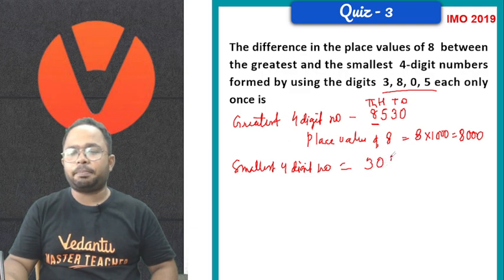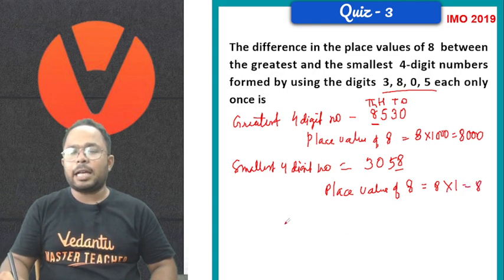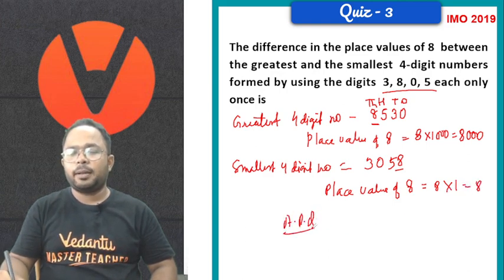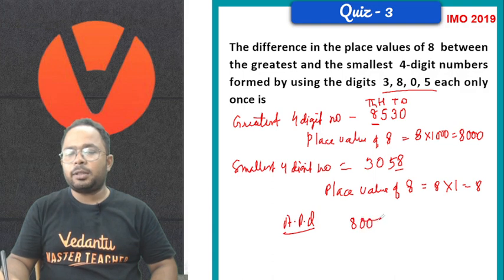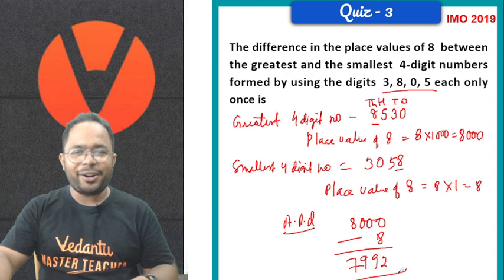If we want to get the smallest 4 digit number, by using 3, 8, 0, 5, we can make the smallest digit number is starting with 3. Why not 0? Because if we use 0, it will become 3 digit. After 3, we can put it up. 3, 0, 5, 8. Now, again, place value of 8 is being in unit place. So, 8 into 1 is 8. As per the question, it is being 8000 subtracted by 8. So, 7, 9, 9, 2 is our answer.